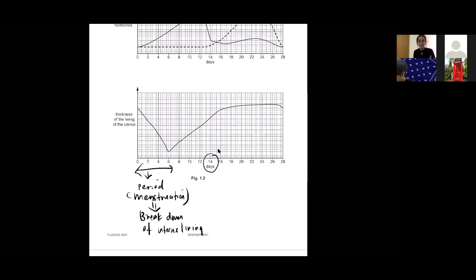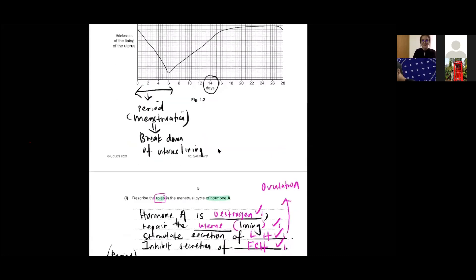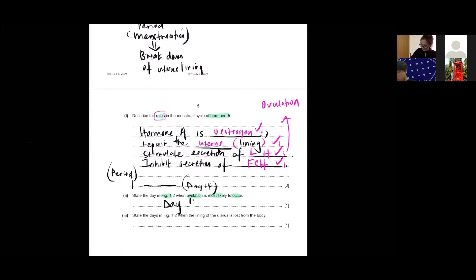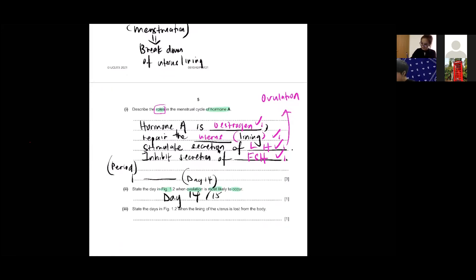Therefore your ovulation will be on day 14. If you want to put 15 also can, plus minus one. Yes, so day 14, 15 also can, 16 also can, all right. For this one they are quite lenient.